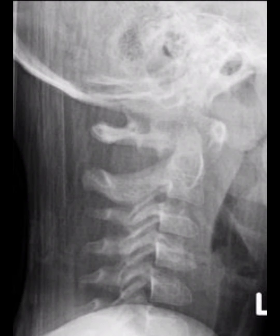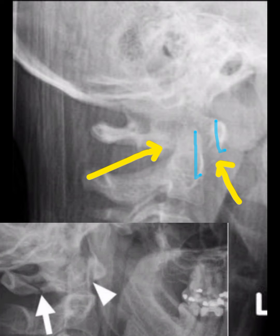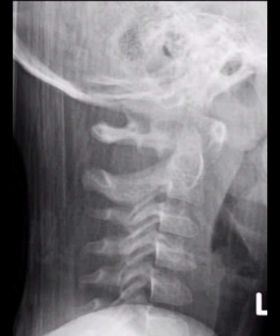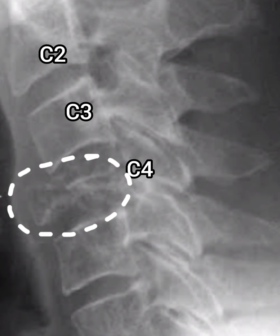This X-ray neck lateral view shows increased space between the anterior tubercle and the dens process, and there is also a fracture in the posterior arch. This is a clear case of Jefferson fracture of C1, clearly seen in this X-ray.